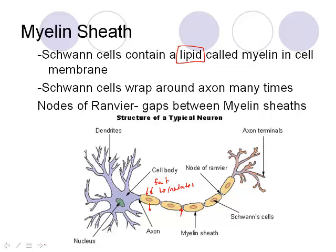Between the myelin sheaths are small gaps called nodes of Ranvier. At these points, substances can exit and enter the axon. We'll see why that's important in the next lesson.